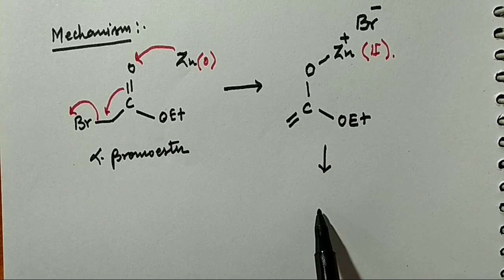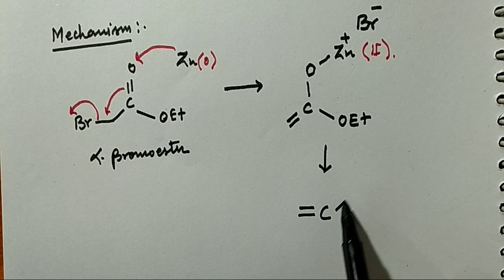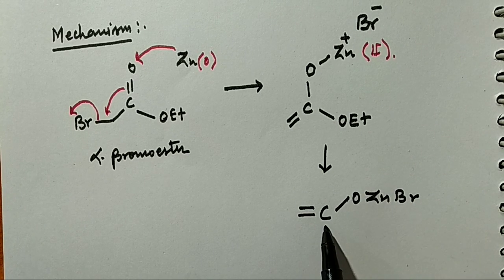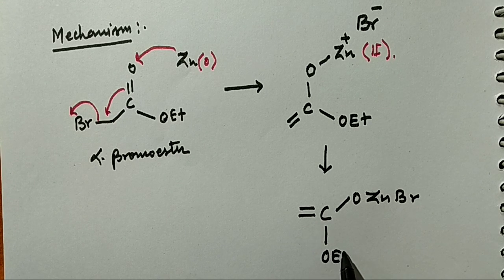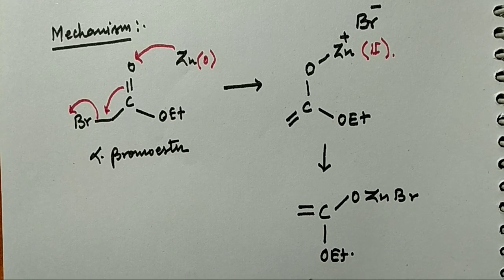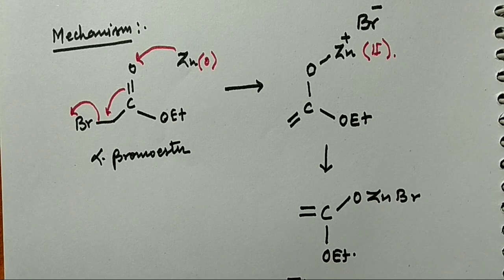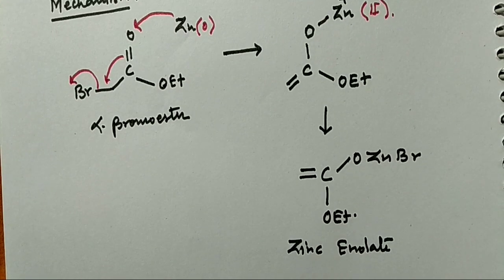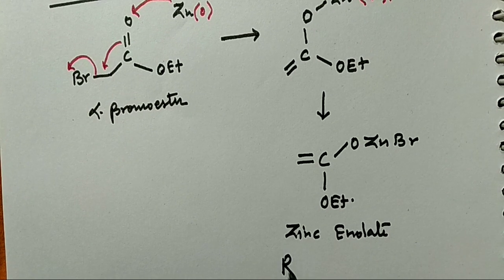What we get is the Reformatsky reagent: O–Zn–OEt, where the oxidation state of zinc is plus two. This is called zinc enolate, and this zinc enolate is called the Reformatsky reagent.